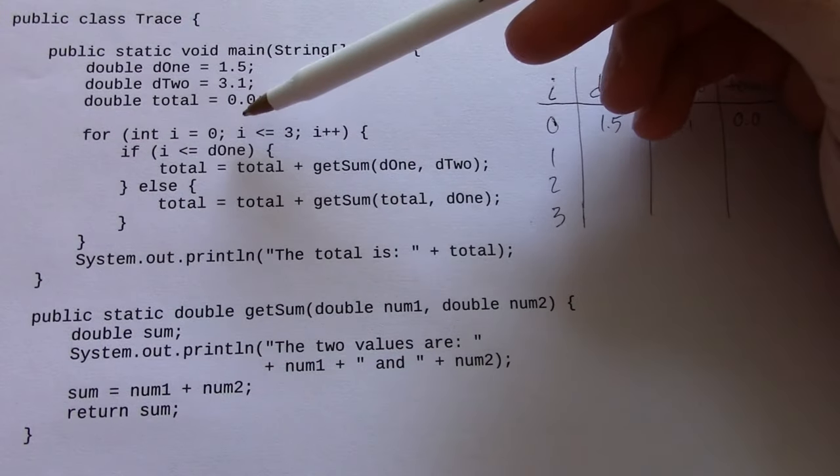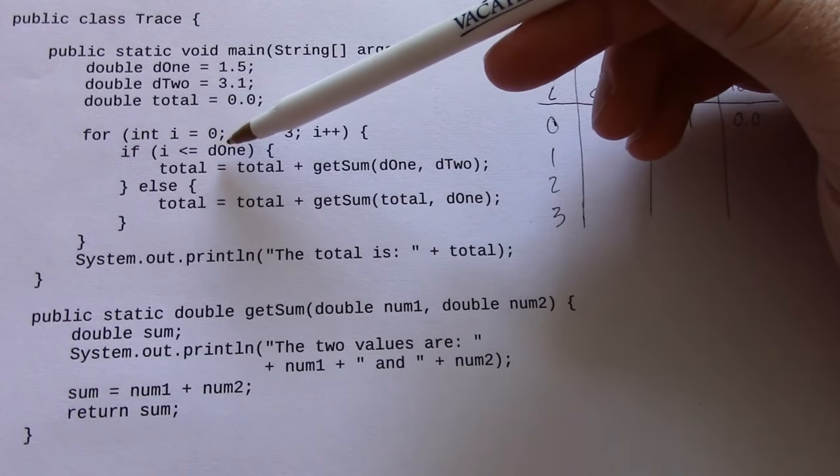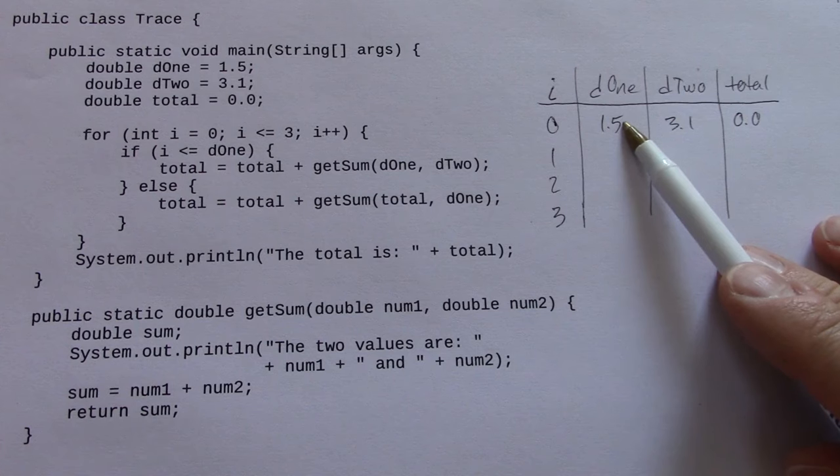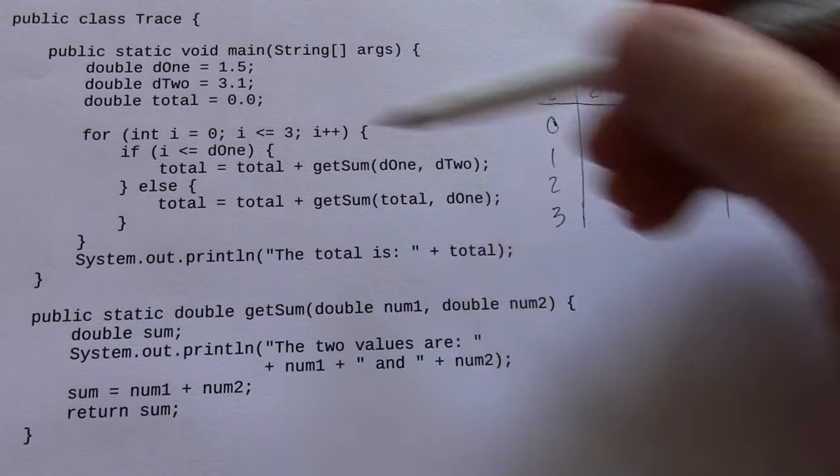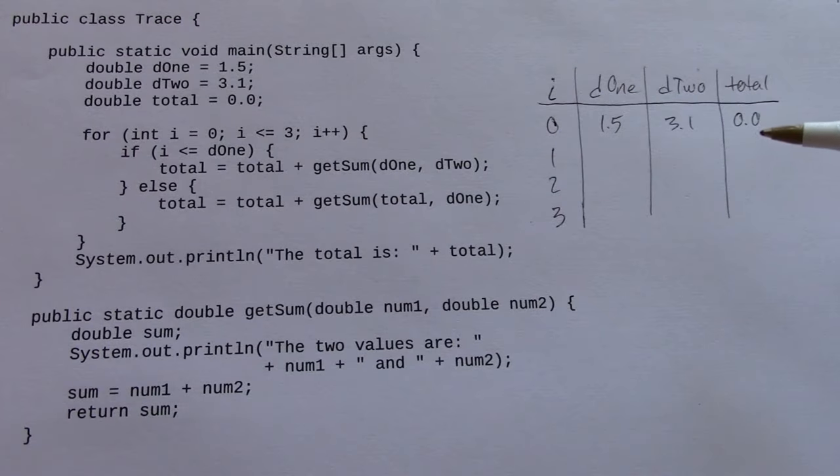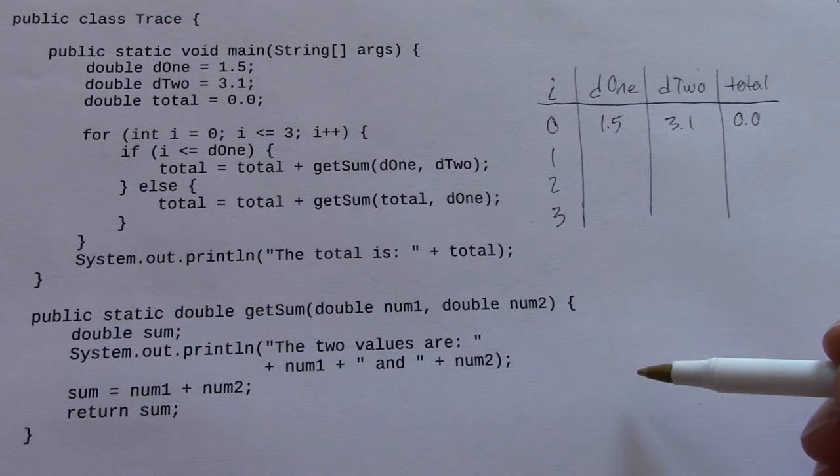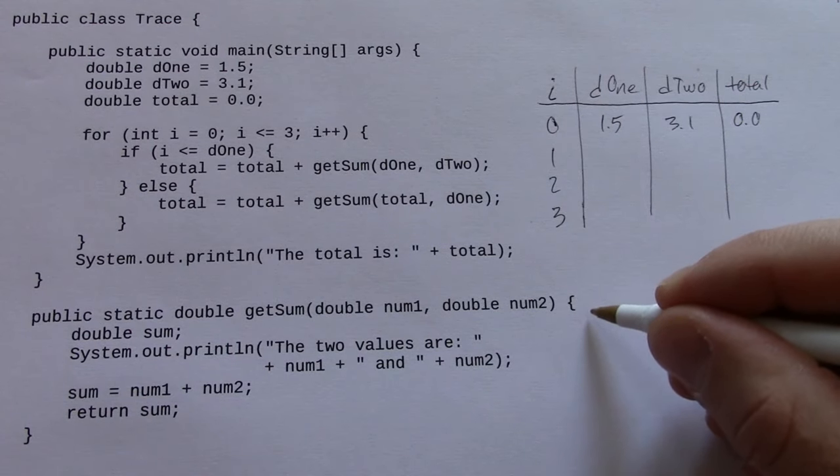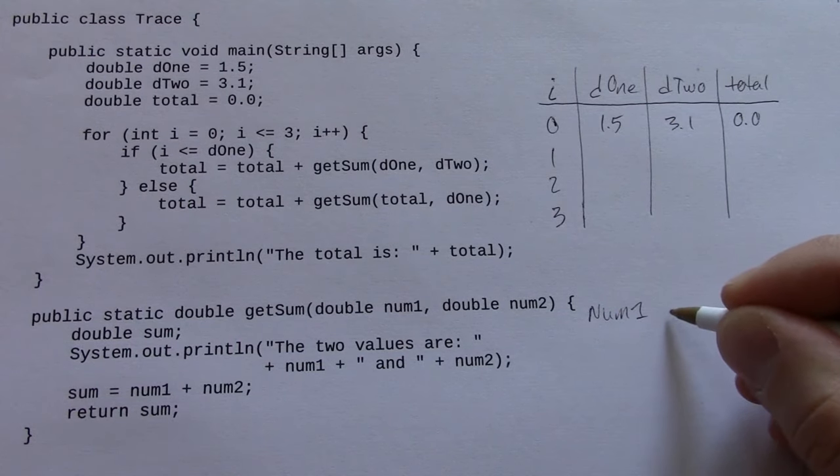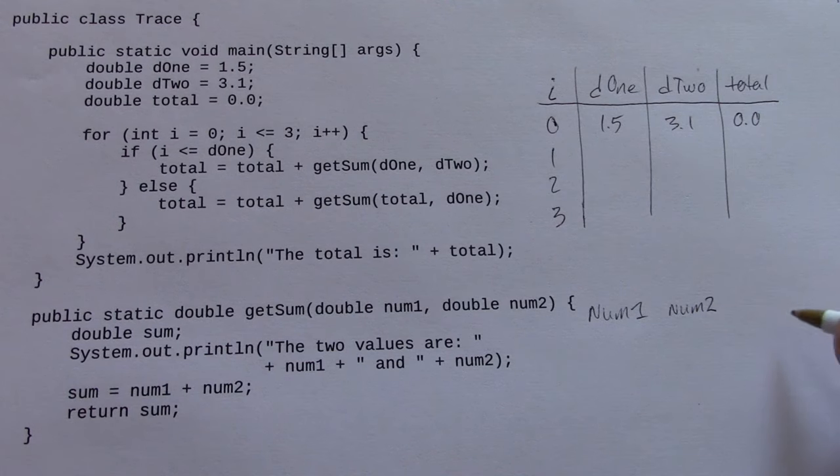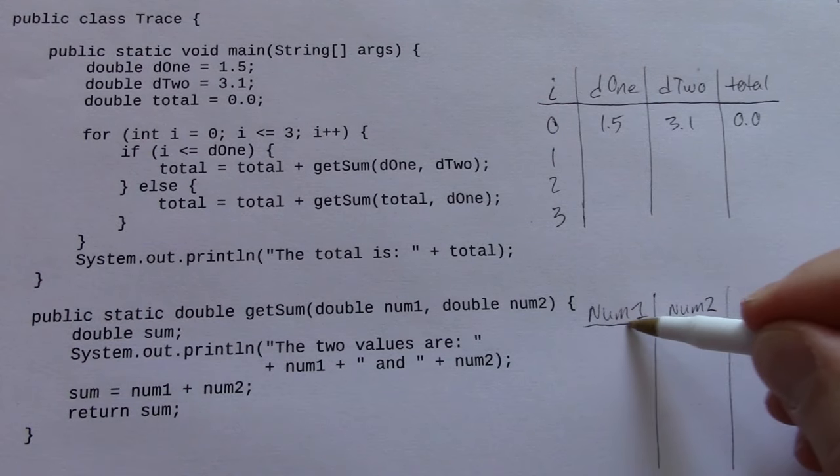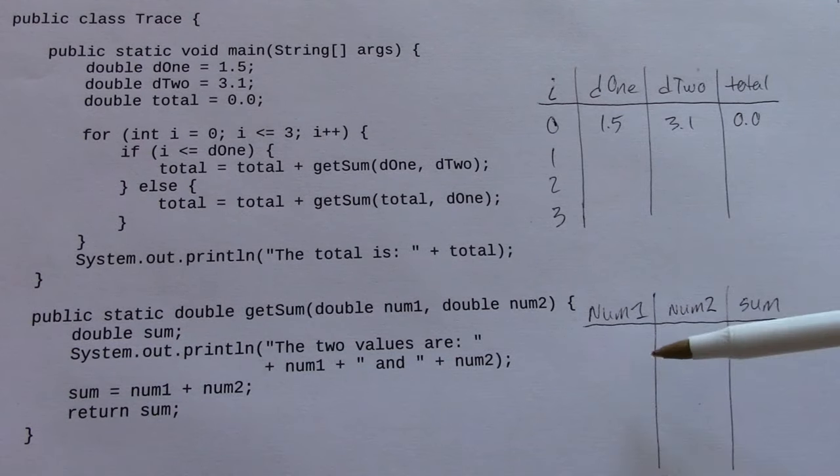So what's going to happen here is as the code executes, it's going to test if i is less than or equal to d1, and you can see in the table that that will be true. So this branch will be executed, total equals total plus getSum. And the getSum method, I'm going to draw a similar table. So here I've got num1, num2, and sum. Those are the three variables declared in that method. Now, this method is not looping, but the main method is looping that's calling this method. So I'm just going to draw a similar table so each time the method is called, I can just see on one row of this table what the result of that method call is.